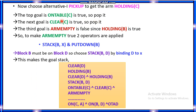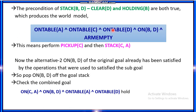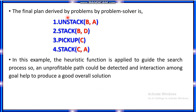Choosing pick-up(C): the top goal on-table(C) is true, so pop it. Next goal clear(C) is also true, so pop it. Third goal arm-empty is false because holding(B) is true. To make arm-empty true, we apply either stack(B, X) or put-down(B). Since block B must go on block D, we choose stack(B, D), substituting X with D. The preconditions of stack(B, D) — clear(D) and holding(B) — are both true. The final plan derived is: unstack(B, A), stack(B, D), pick-up(C), stack(C, A).